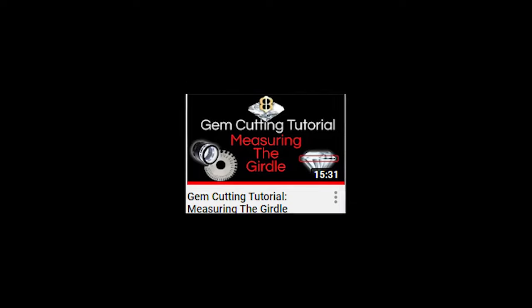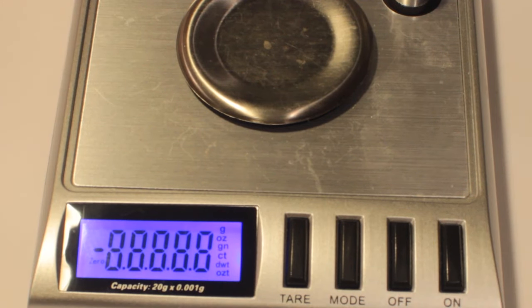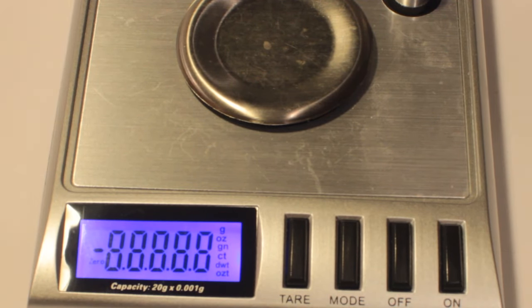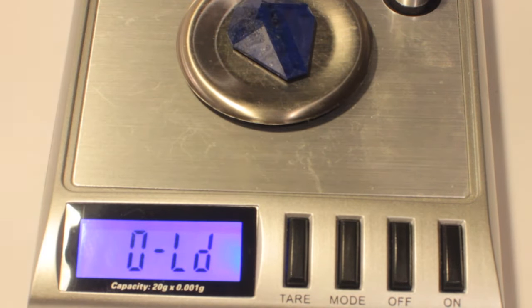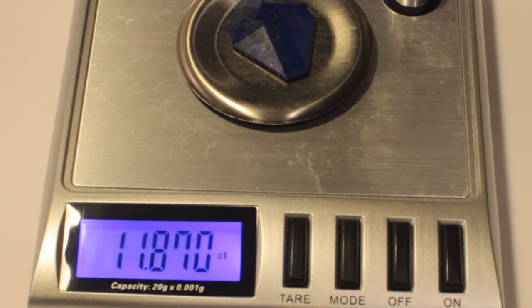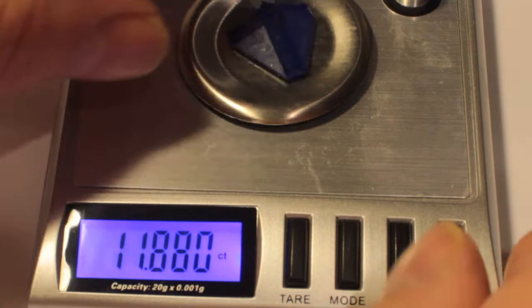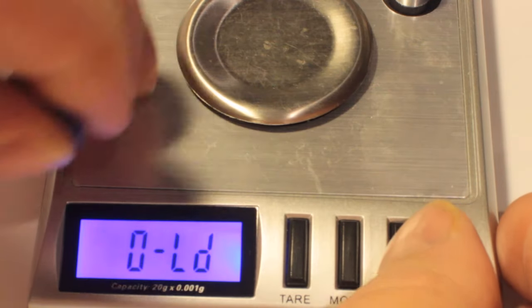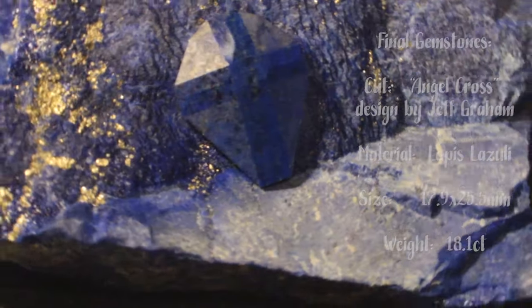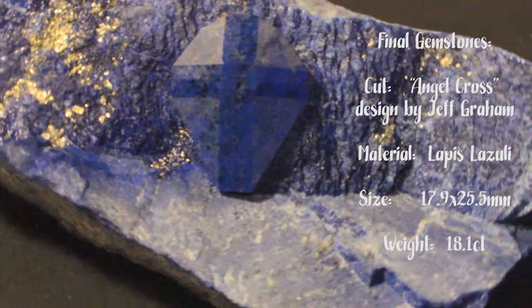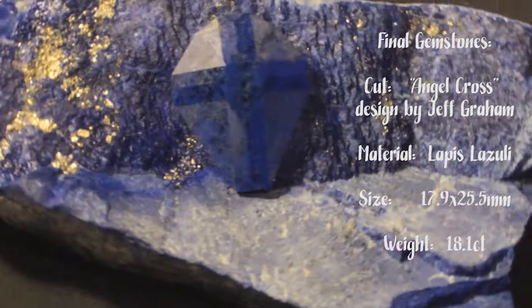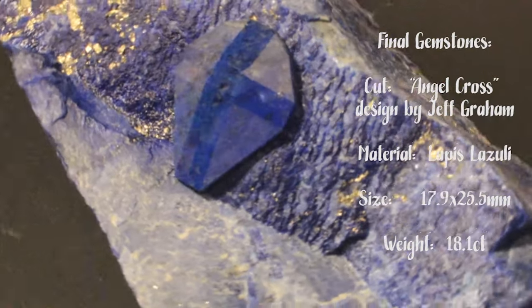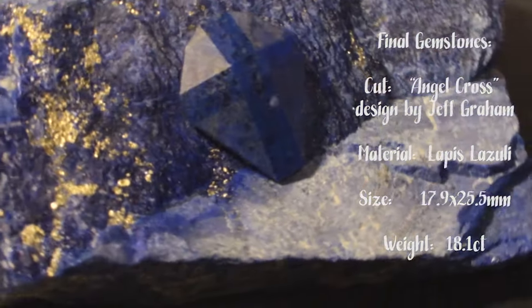The angel cross design works well with stones like lapis because the frosted facets and polished cross stand out on this stone, because you can't see through it and also because that deep beautiful blue color just looks great in the lapis color. I don't cut a lot of non-transparent gemstones but I don't mind cutting a lapis once in a while, but as a general rule I leave lapis to the cabbing community.